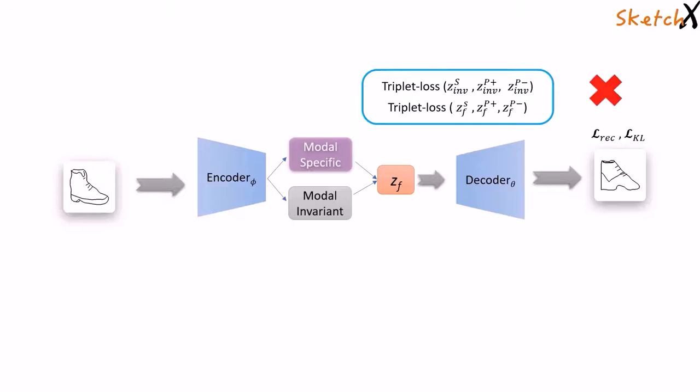However, this is not enough, as a disentanglement module needs to dynamically adapt itself over different sketch styles for the same object. Accordingly, we introduce a regularizer that modulates the parameters of the modal-invariant code to vary the extent of disentanglement.